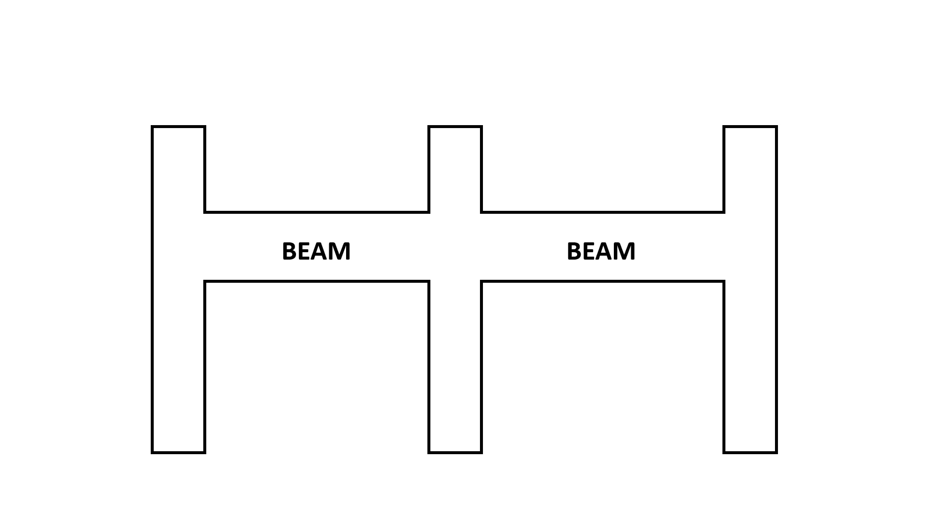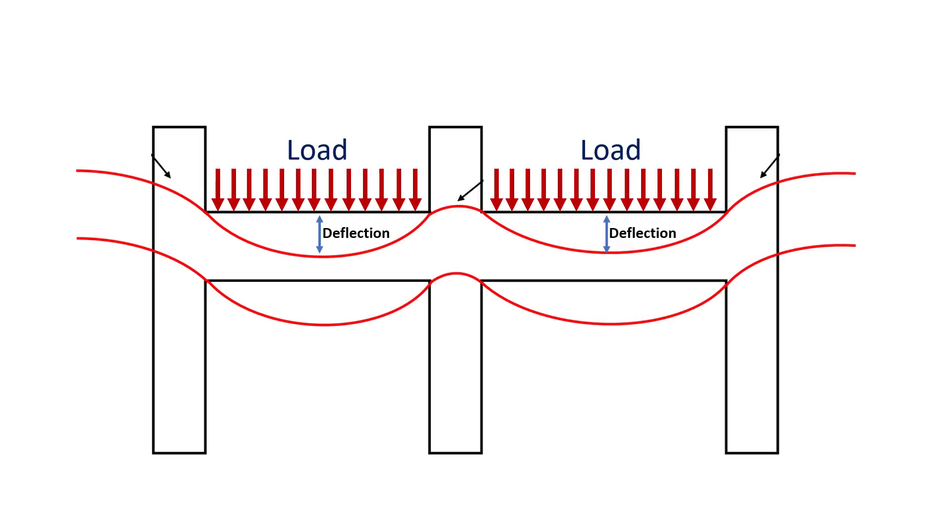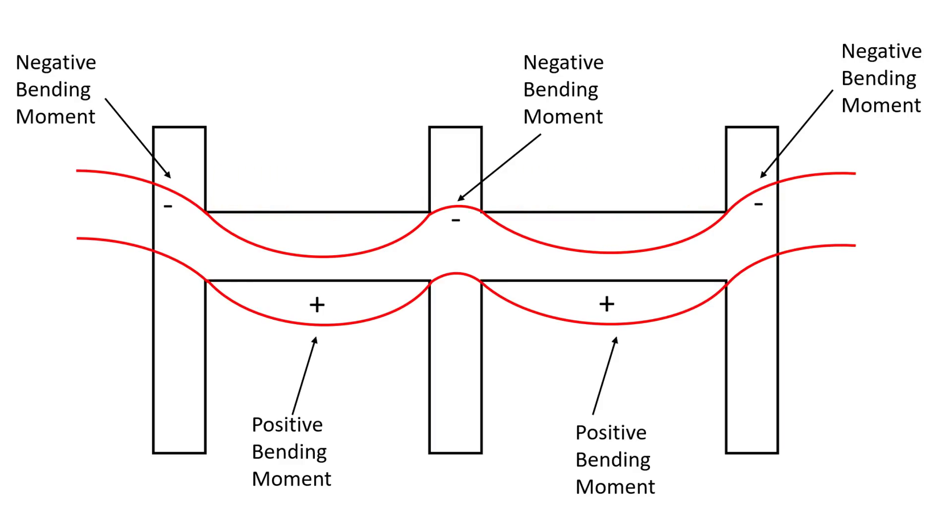Imagine a beam or a slab spanning some distance subjected to various loads. These loads exert forces on the structure. As a result, the beam will tend to bend in the way shown in this picture. Due to the loading, the member will be subjected to bending moments. There will be positive bending moment or sagging moment at the mid-span of the beam, and negative moments or hogging moments at both the supports.